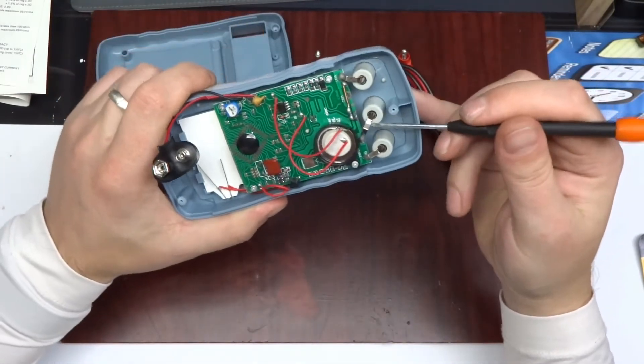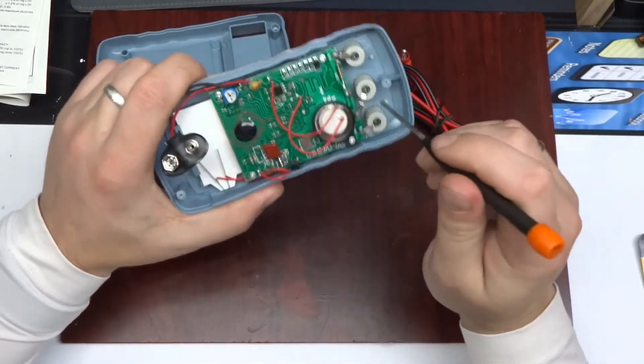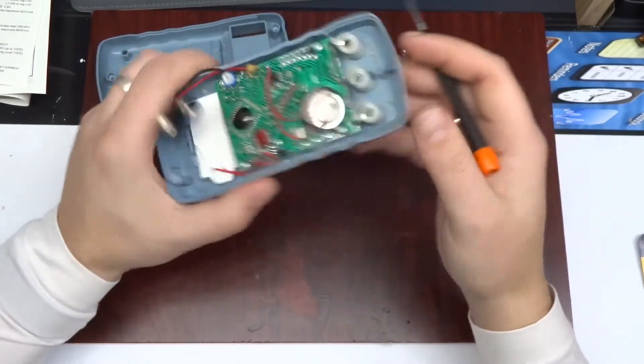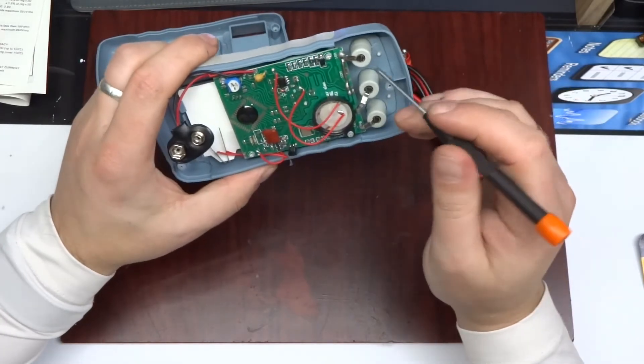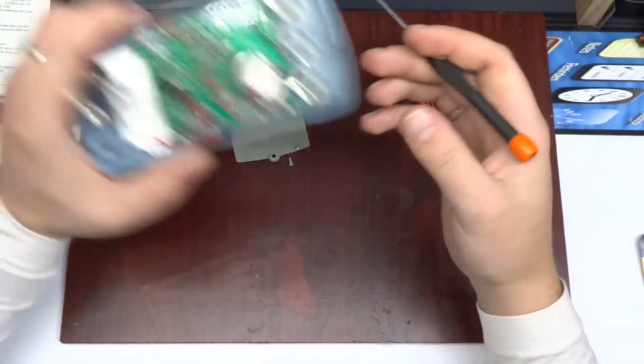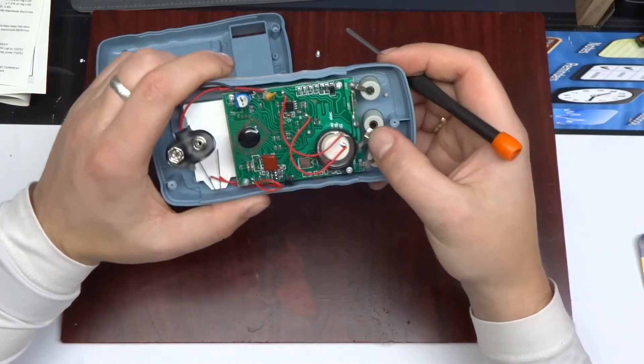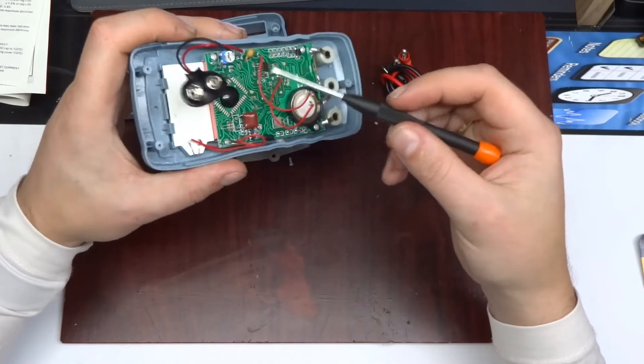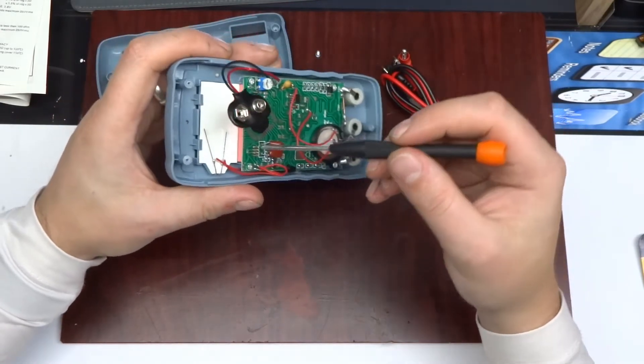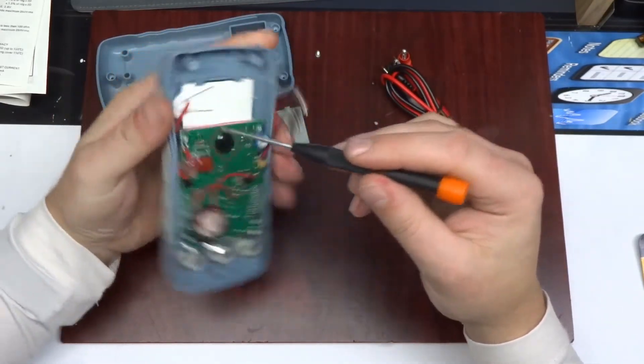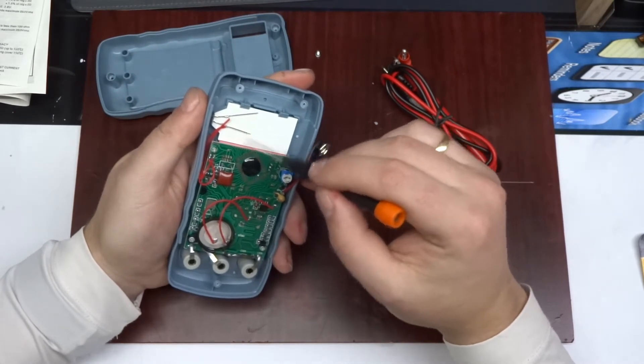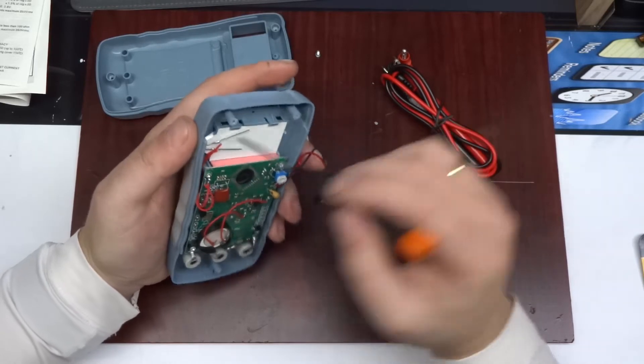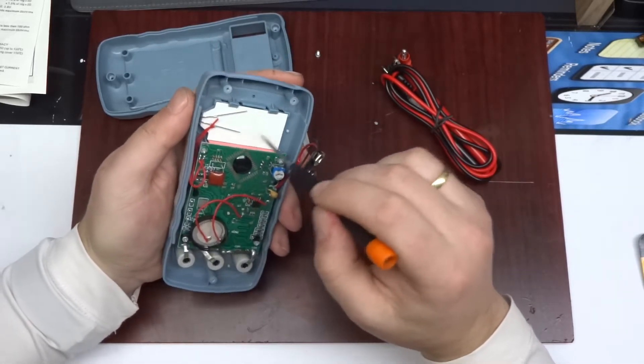Of course you can see the usual arrangement, so the actual plugs for the banana jacks. They're all there, they are being held in place pretty much just by the solder that they've been soldered with, so they're not too great I guess.